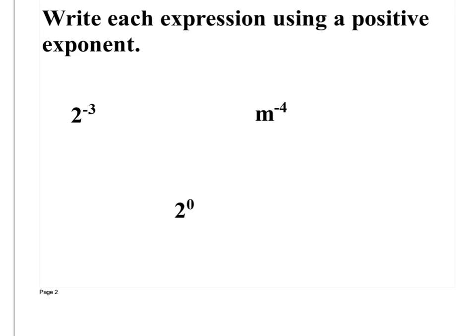Write each expression using a positive exponent. They'll give you expressions with negative exponents, and you have to write them with a positive exponent. So all we do is put 1 over, and then 2 to the 3rd power. That's how we get rid of the negative exponent — we flip it to the bottom and make it a denominator.